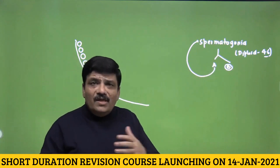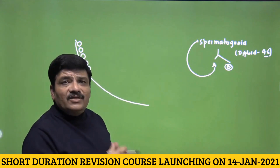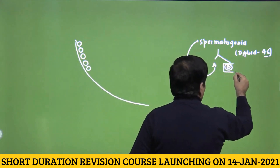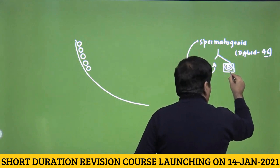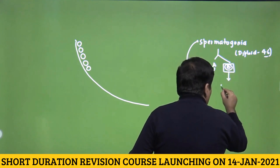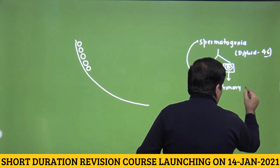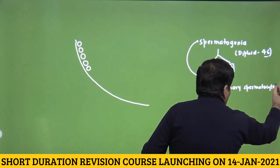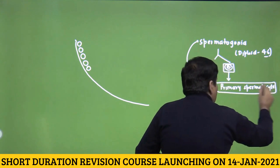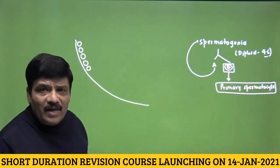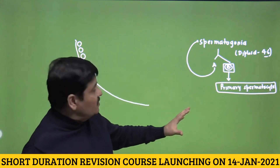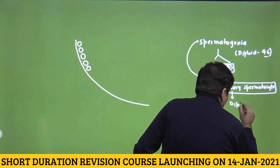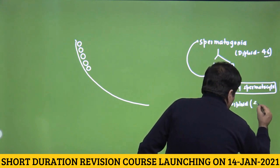Spermatogonia are of two types: type A and type B. Some spermatogonia continually divide by mitosis to replenish their numbers. Some of them divide to form type B spermatogonia, and it is these type B spermatogonia that divide and mature into a cell called the primary spermatocyte. No meiotic division has taken place yet — this is all by mitosis and differentiation — so the primary spermatocyte is still diploid with 46 chromosomes.